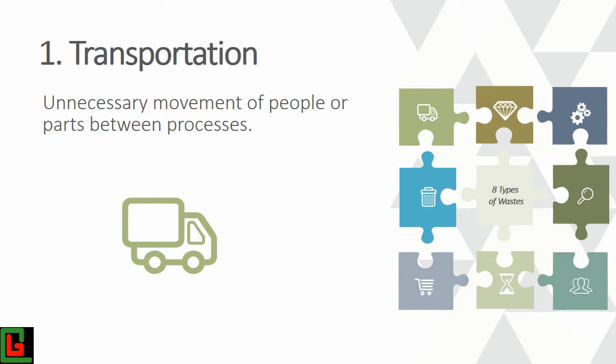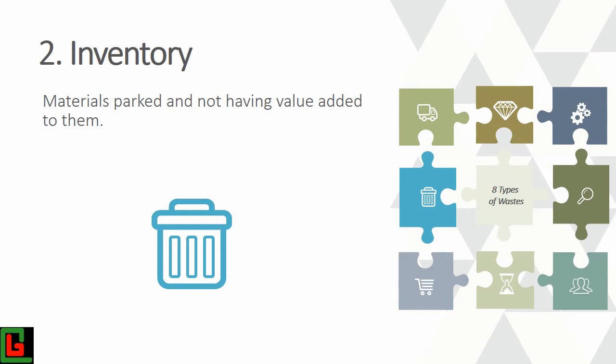To avoid unnecessary transportation, look into your system and see where it occurs. It can be avoided by putting things together — if your machines or processes are nearby, you don't need to move material from one place to another. Eliminating transportation is one way to eliminate waste.